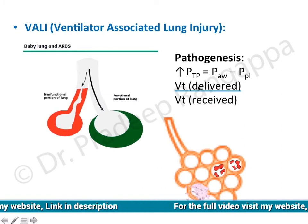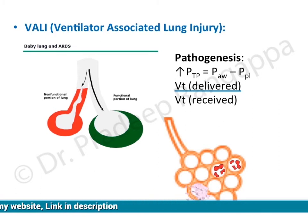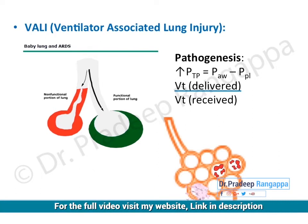To simplify our understanding of transpulmonary pressure: it is the difference between the tidal volume that is delivered — meaning the tidal volume you have set to be delivered — and what is the tidal volume that the lung actually receives. The difference between what is delivered and what is received is what will determine the transpulmonary pressure.